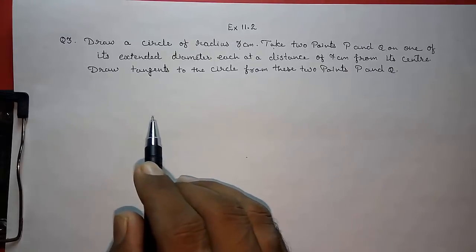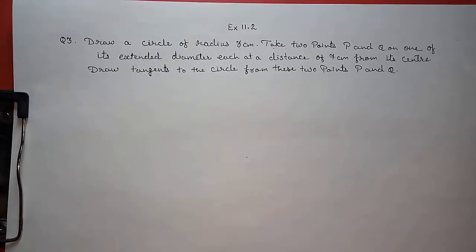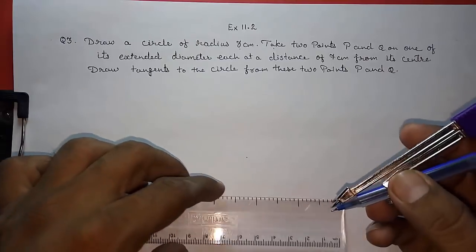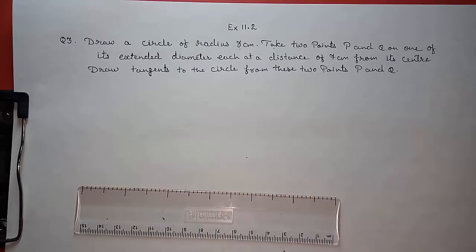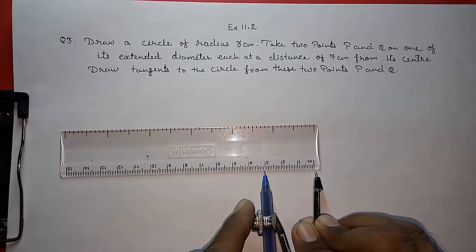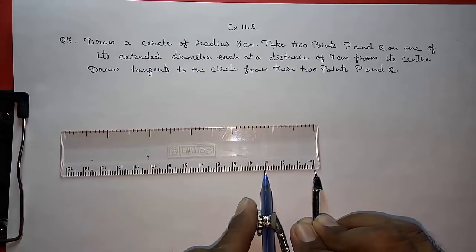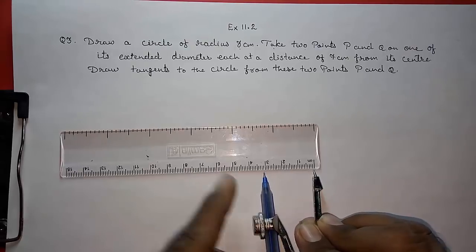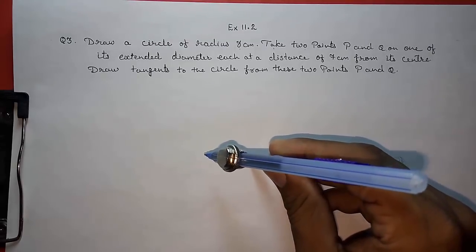So first we have to draw a circle of radius 3 centimeter. I am drawing it. Look here. First we have to take 3 centimeter on our circle. You can see this. It should be perfect. Now I am drawing it.